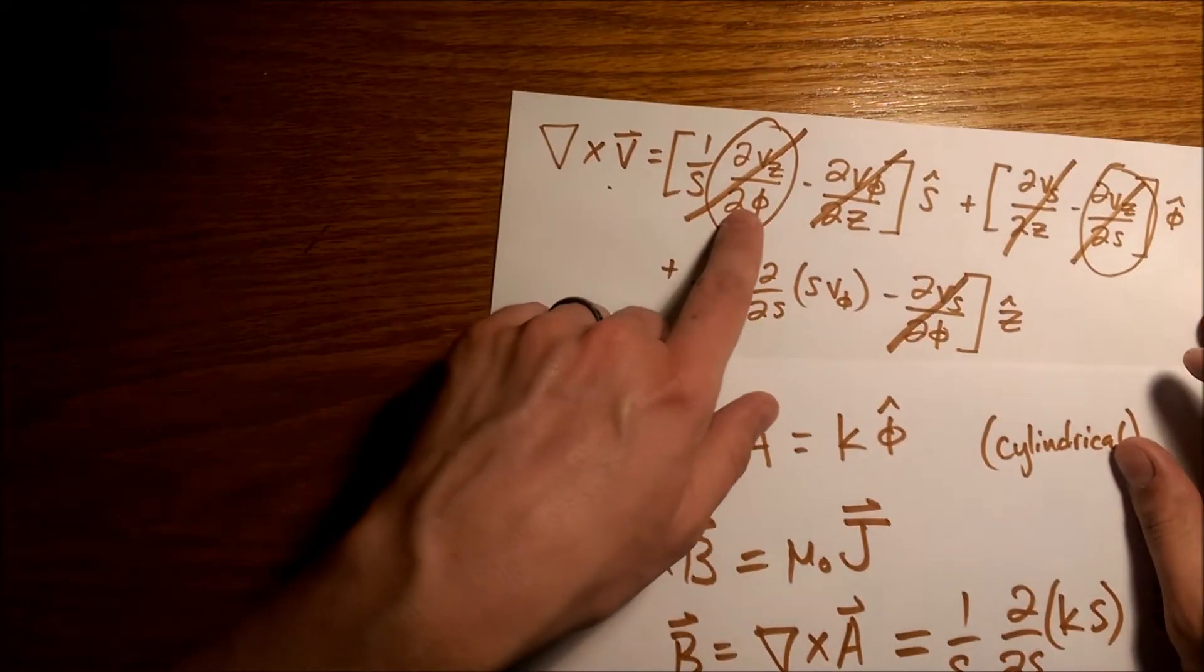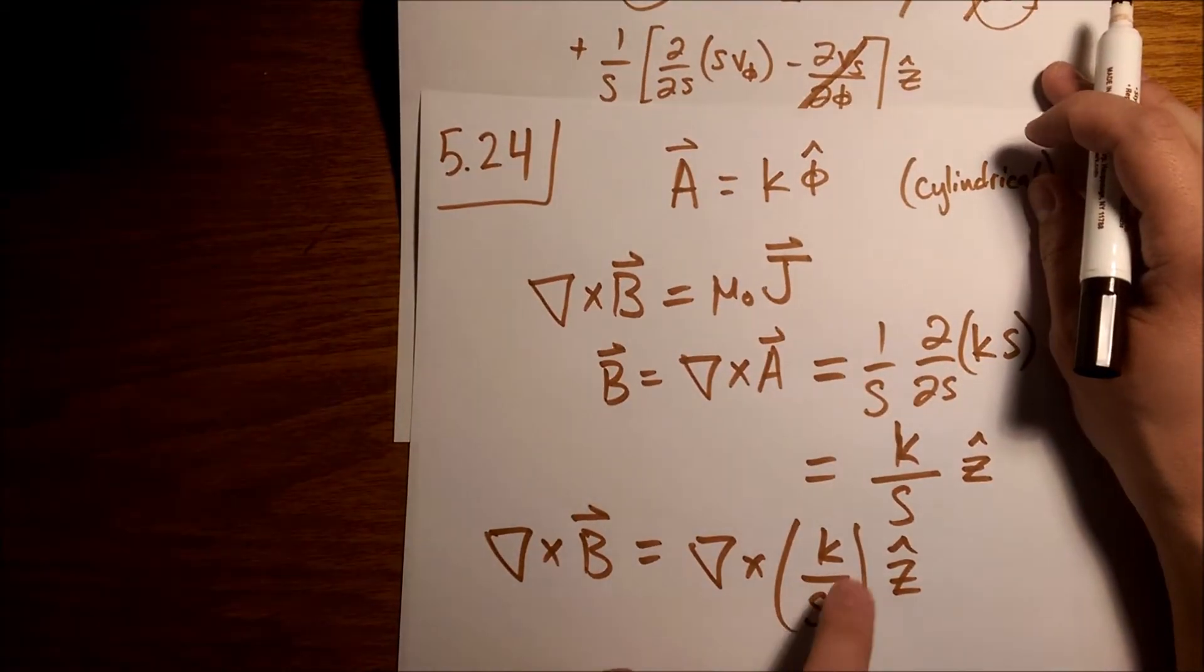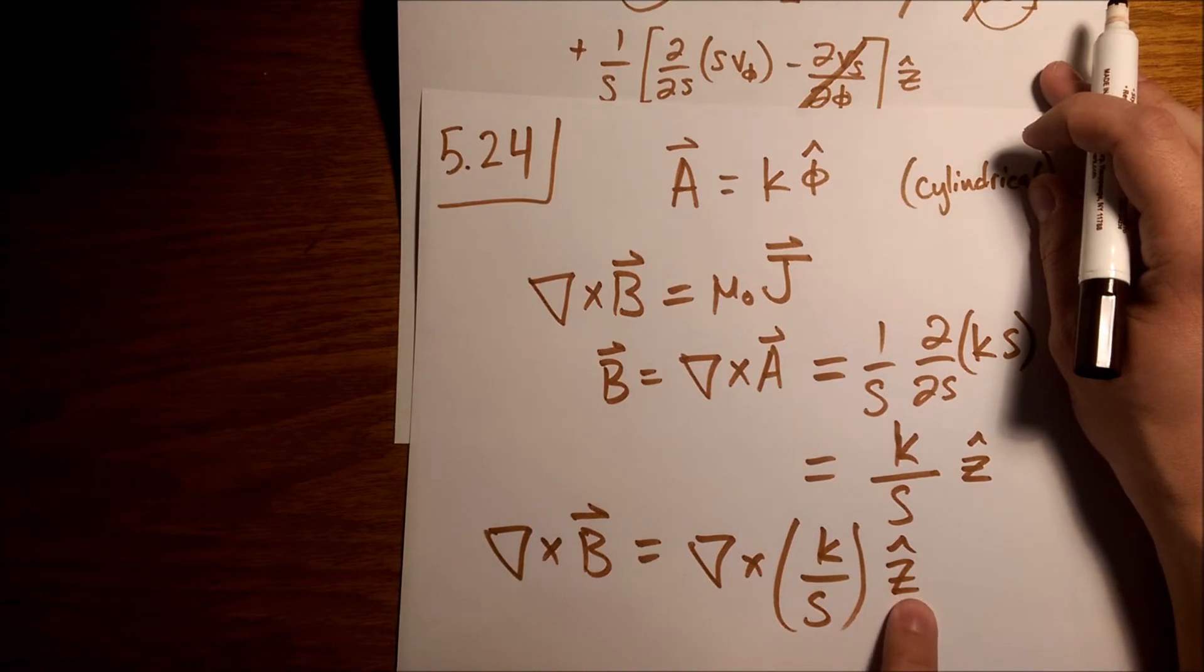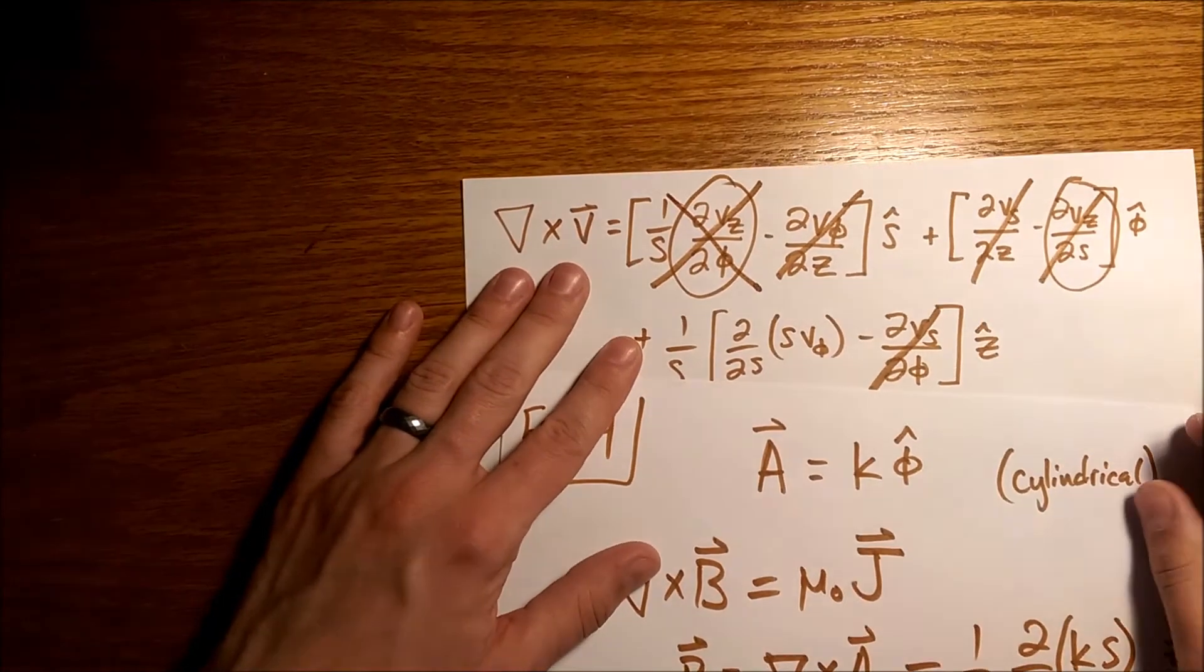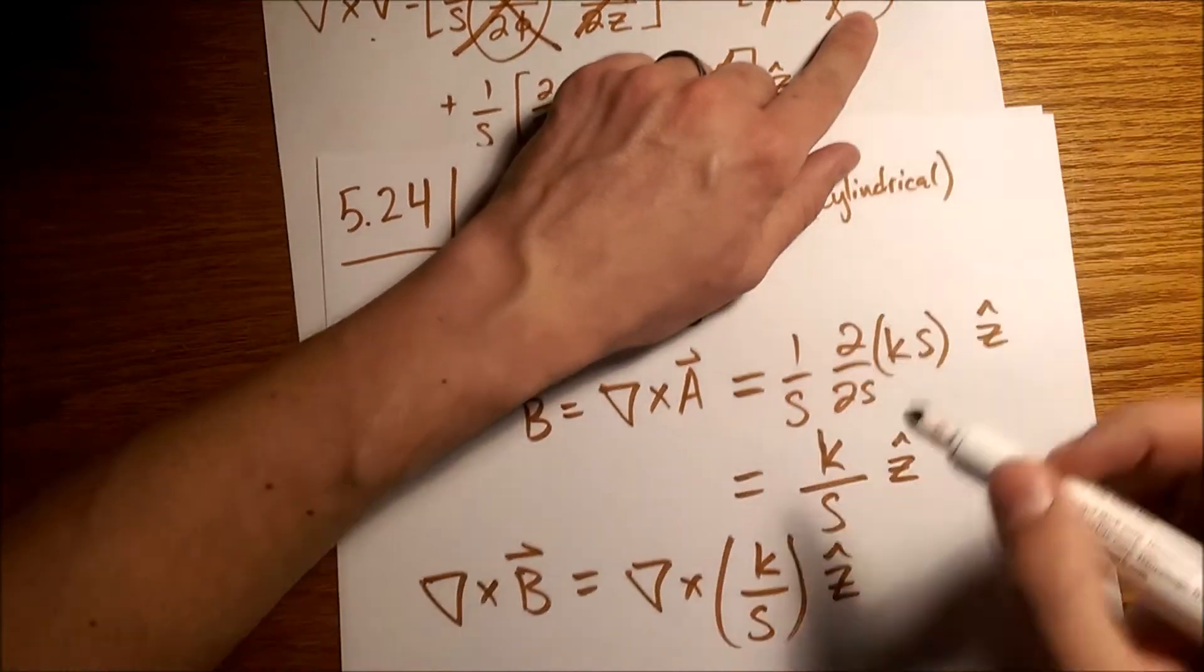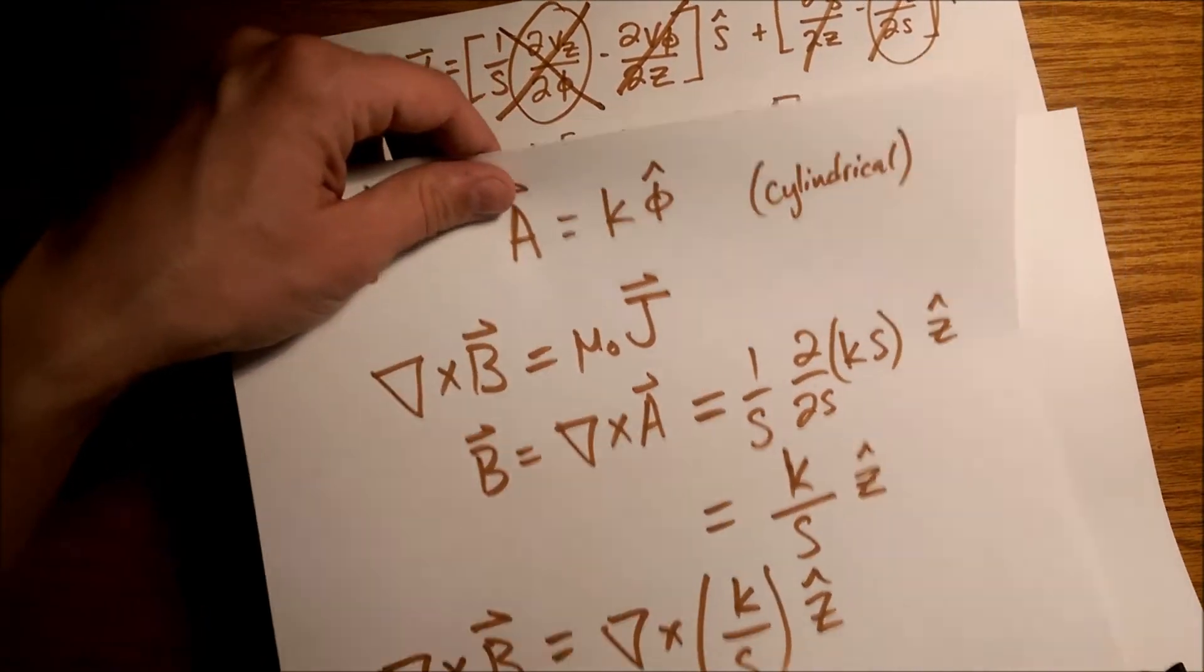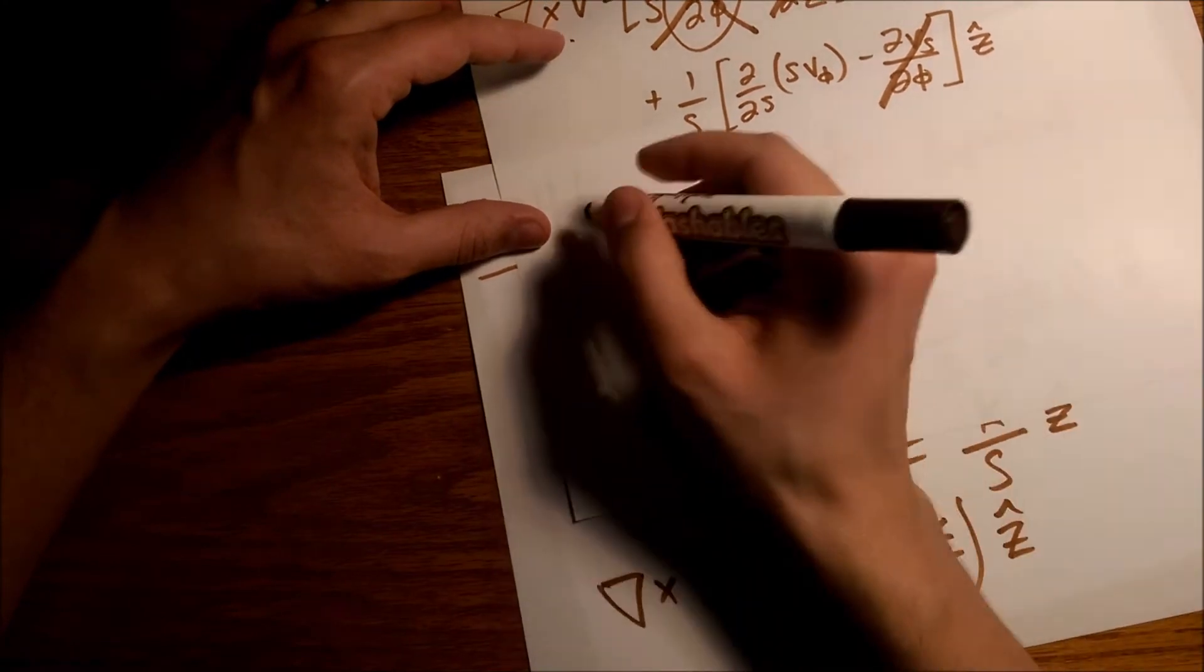Now, is there any phi dependence in this v sub z? Alright, so here's the v sub z, this part has the z component, there is no phi dependence, alright, so this one is still zero. This one here though, there is an s dependence now.